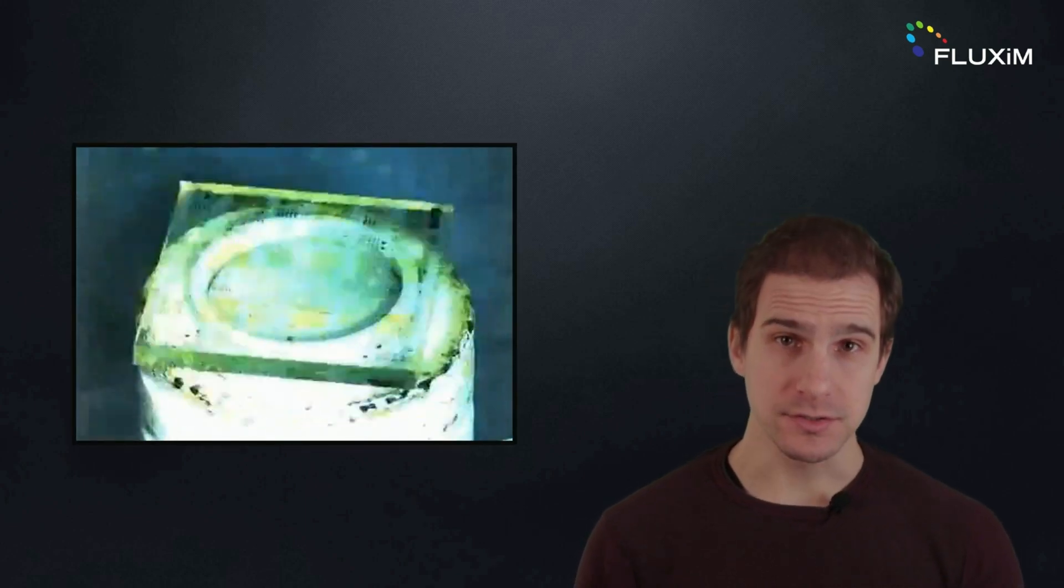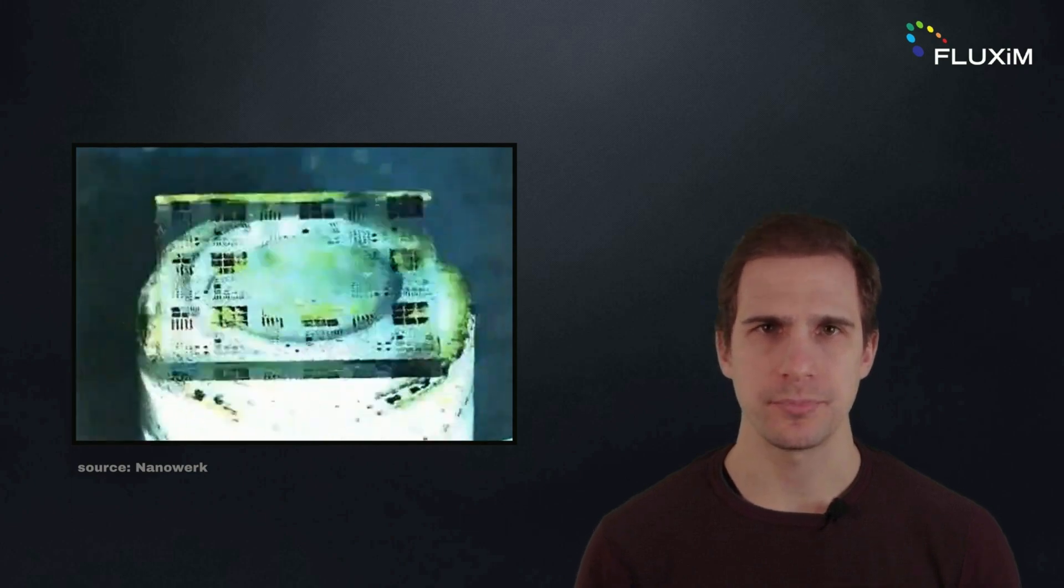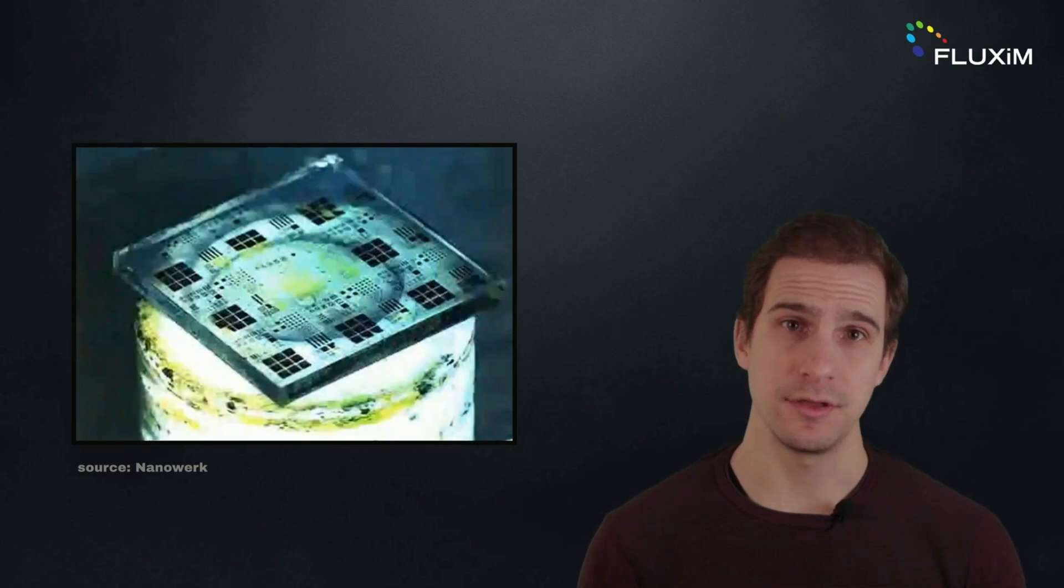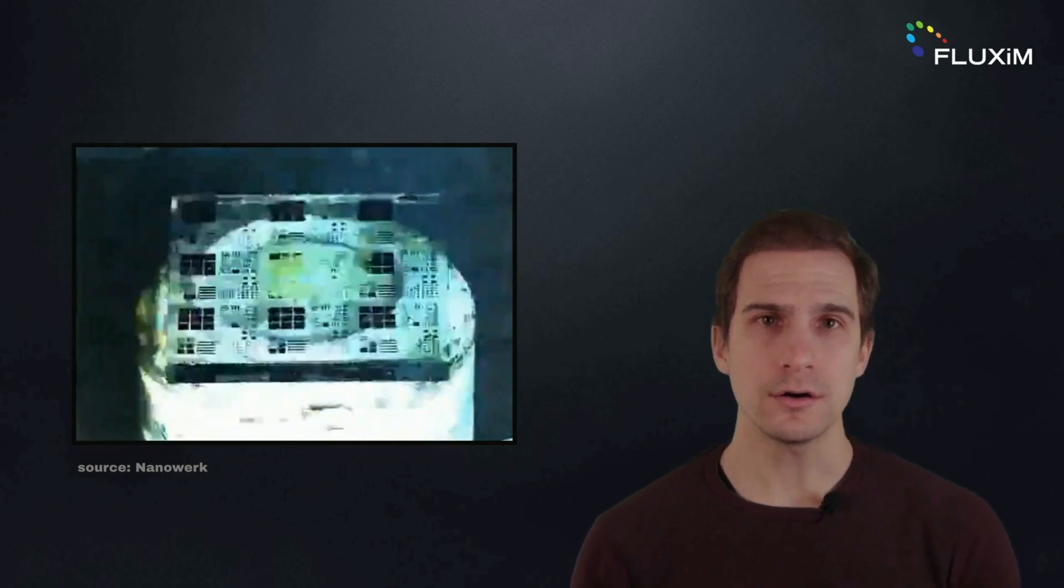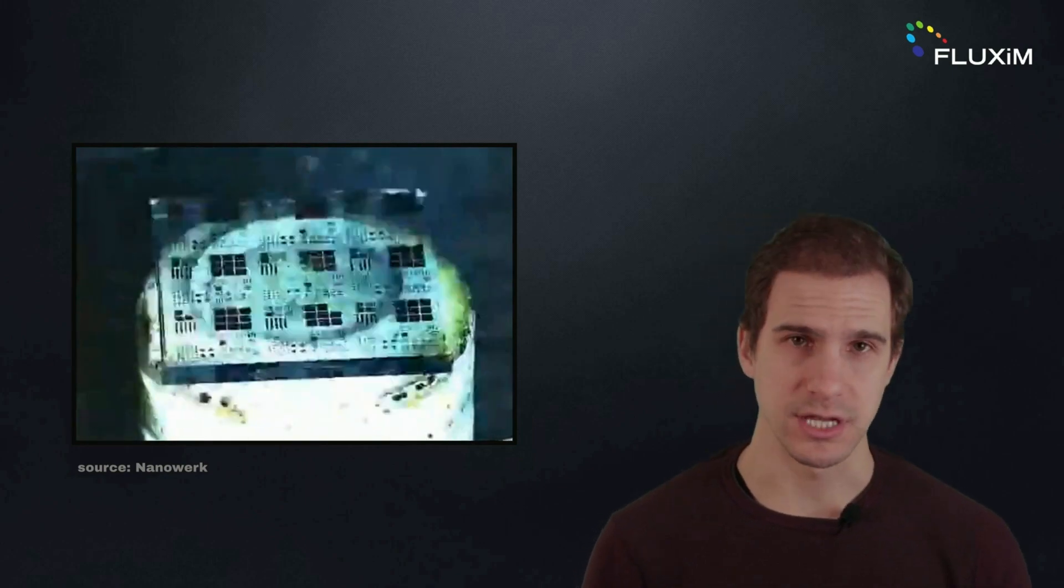However, spin coating perovskite on a textured surface leads to uneven deposition and a formation of holes. Possible solutions include reducing the texture size and depositing a thicker perovskite layer, or depositing the perovskite conformally to the texture of the silicon subcell.